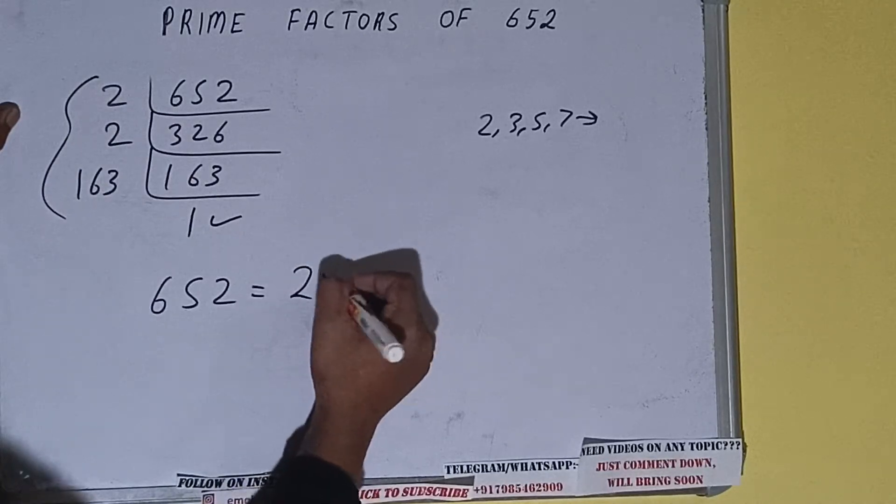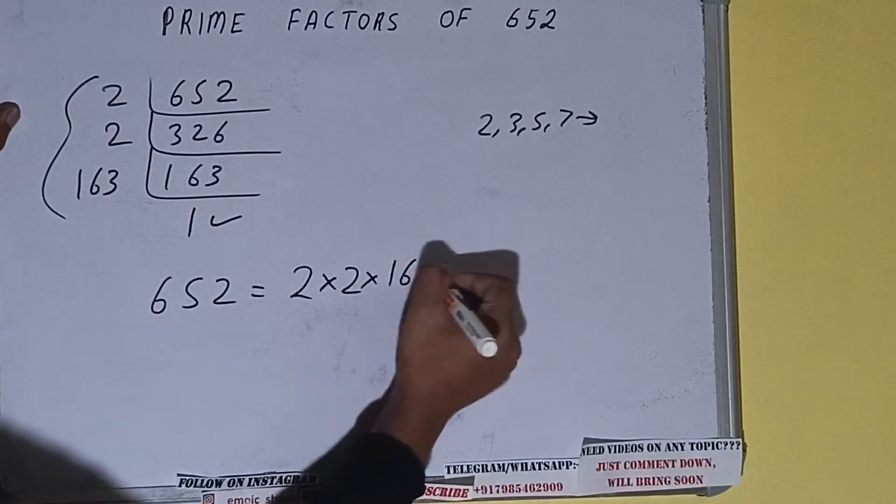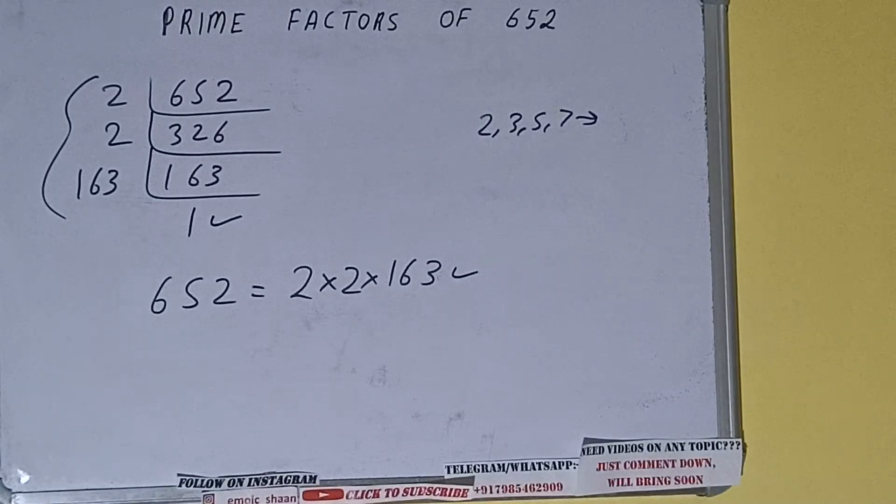That is, the prime factorization of 652 equals whatever we have on the left hand side: 2 times 2 times 163. That will be the answer. So this is all about prime factors of 652.